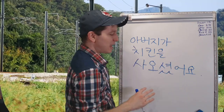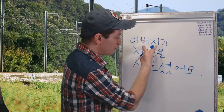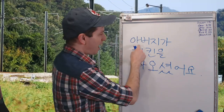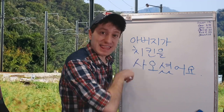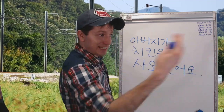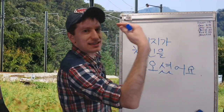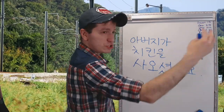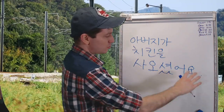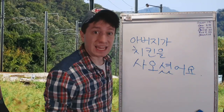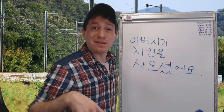아버지가 치킨을 사오셨어요 — Dad bought chicken and brought it home. Dad bought chicken and then 오셨어요, he came here. So the motion of buying has the direction of coming here. 사오셨어요 means he bought it and brought it here. So dad brought us chicken — dad bought chicken and came home with it.